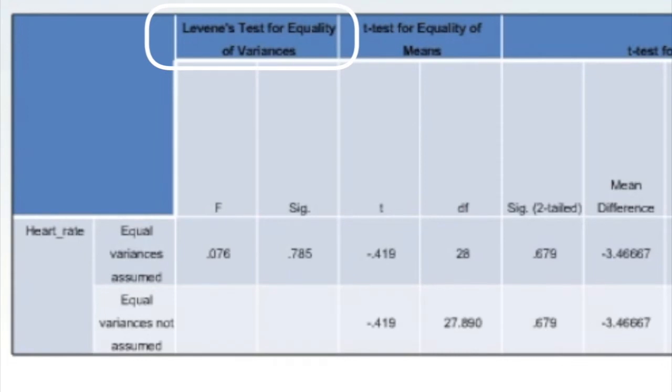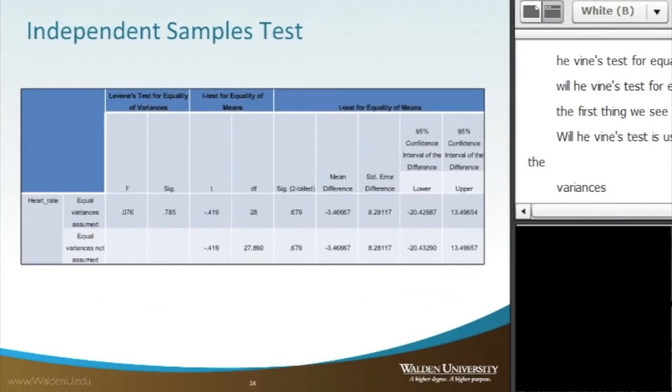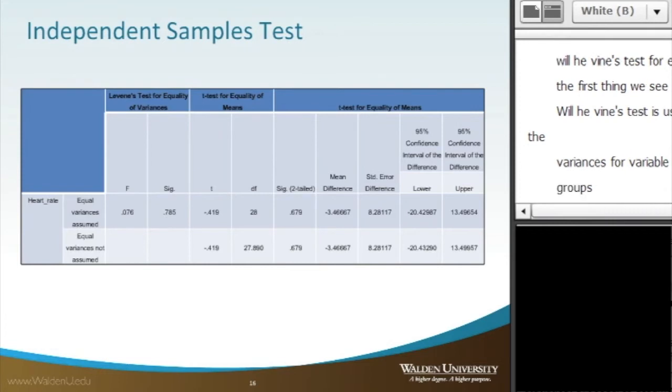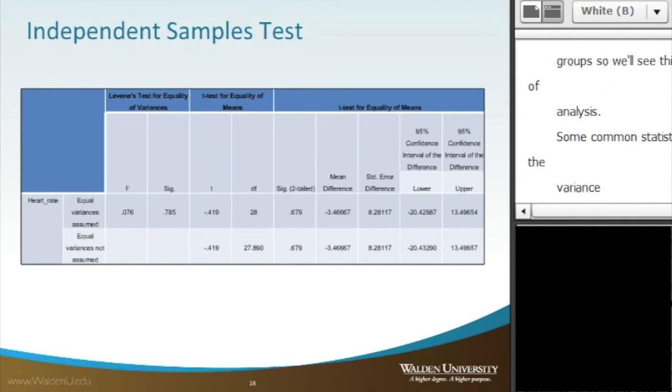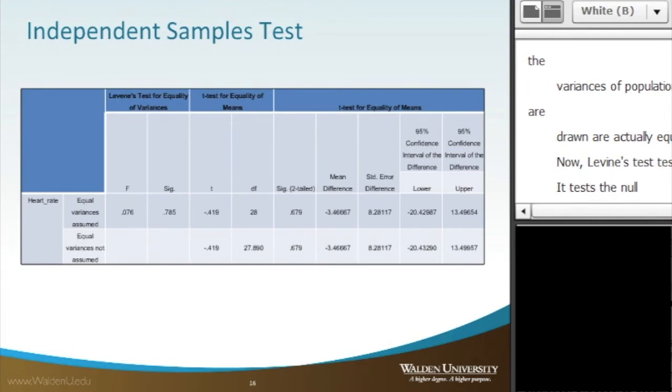Levene's test is an inferential statistical test used to assess the equality of the variances for variable calculating for two or more groups. And so we'll see this with all the test of mean analysis. Some common statistical procedures assume that the variances of the populations from which the samples are drawn are actually equal.